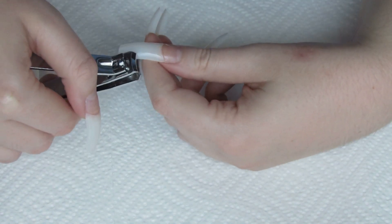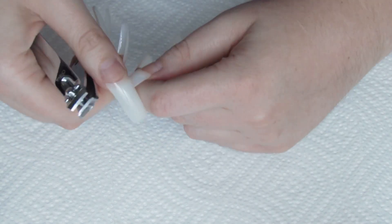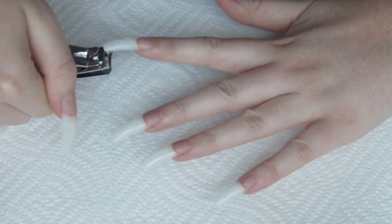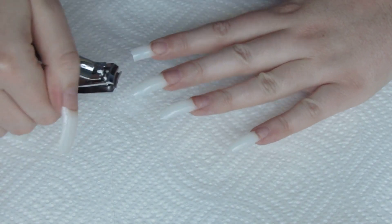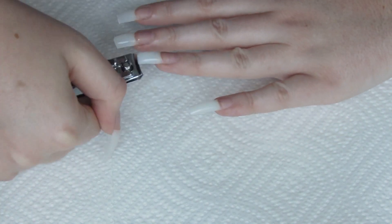At this point I would normally trim and file them to the desired shape that I want, but I am actually going to file them after I put on the acrylic. So I am trimming them down a little bit, but a little bit longer than I actually want the nails.